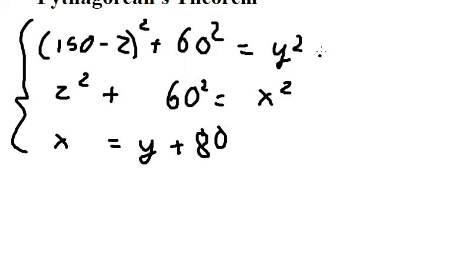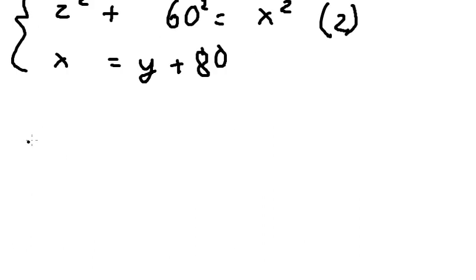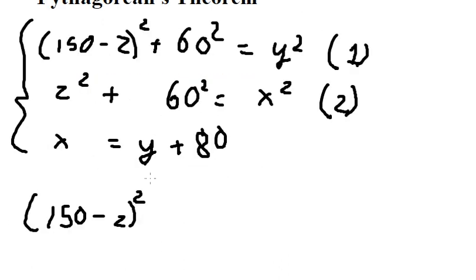So now I will use equation number one minus equation number two, and we have like this. This one minus this one, we have -z², and 60² minus 60² cancel, so we have y² - x².